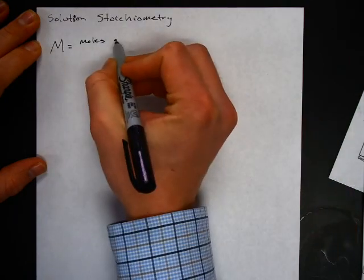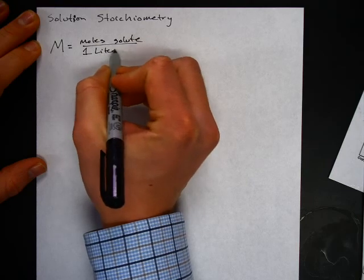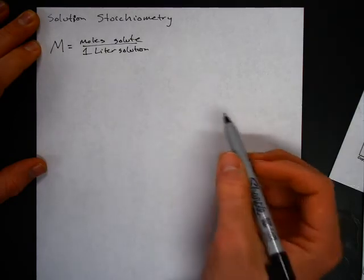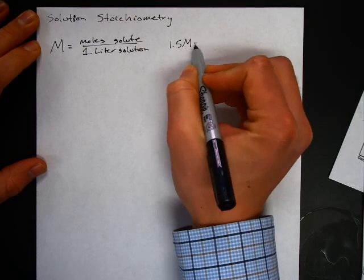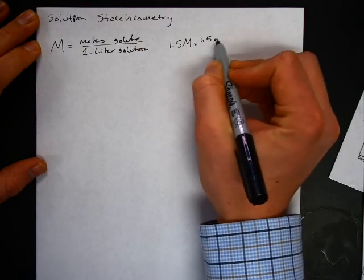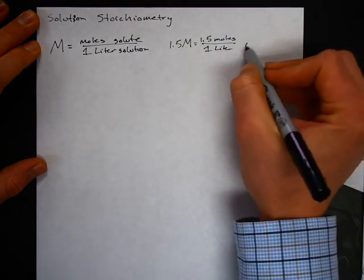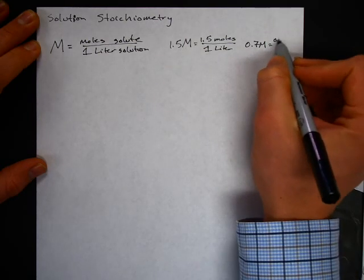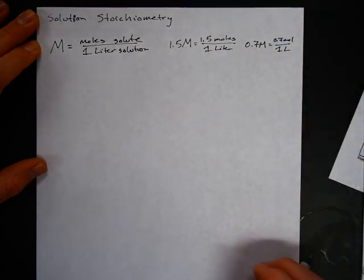We know that molarity is equal to moles of solute per one liter of solution. It's always going to be a ratio of moles of solute to solution. For example, if you had a 1.5 molar solution, you'd have 1.5 moles of solute per one liter. Similarly, if you had a 0.7 molar solution, you would have 0.7 moles per one liter. So whatever that molarity is, that's the number of moles you'll have in one liter of solution.